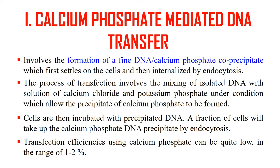This involves mixing isolated DNA with the solution of calcium chloride and potassium phosphate, which ultimately forms the precipitates of calcium phosphate. Then the cells which we want to transfect are incubated with this precipitated DNA. A fraction of cells will ultimately take up the calcium phosphate-DNA precipitate by endocytosis. But there is a drawback — the efficiency is very low, generally in the range of 1 to 2% only, meaning only 1 to 2% of cells actually get the DNA.